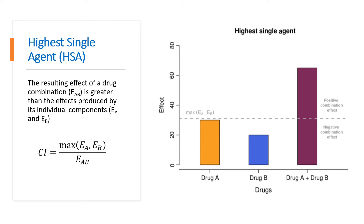The highest single agent approach represents an improvement compared to the previous combination sub-thresholding approach, interpreting the significance of differences rather than the difference of significances. It provides evidence of the superiority of the drug combination compared to its single agents. However, by comparing the combination directly to the highest single agent, this approach fails to demonstrate an improved drug combination effect compared to the expected additive effect of its individual components. As a consequence, a positive result indicates a positive drug combination effect with an amelioration compared to the single drugs considered alone, but provides very limited evidence of synergy except in the case where at least one drug is known to be inactive at any concentration.